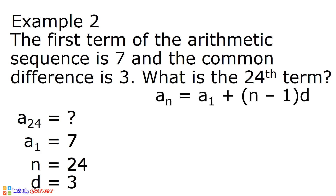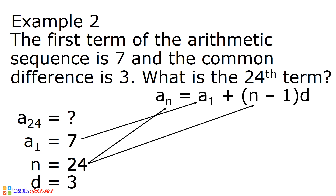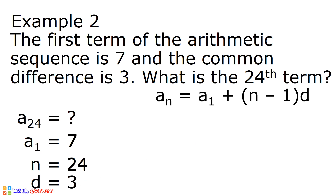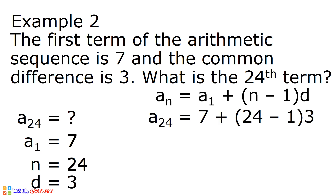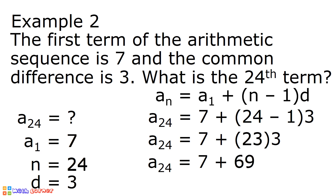Let us substitute all these given values into our formula. 7 goes to a sub 1, 24 to n, and 3 to d. After substitution, we have a sub 24 is equal to 7 plus quantity 24 minus 1 times 3. 24 minus 1 is 23, so we have a sub 24 is equal to 7 plus 23 times 3. 23 times 3 is 69, so a sub 24 is equal to 7 plus 69. 7 plus 69 is equal to 76, and that is the 24th term of our arithmetic sequence.